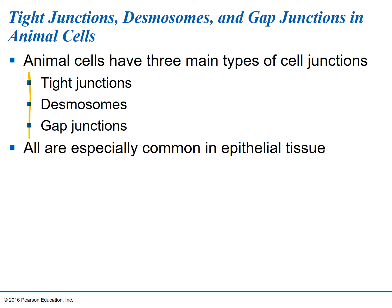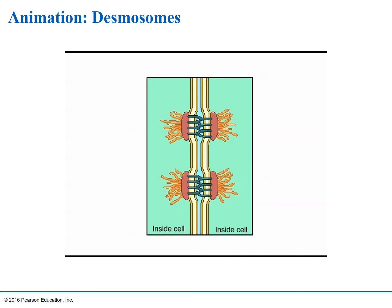These three junction types — tight junctions, desmosomes, and gap junctions — are found in eukaryotic animal cells, specifically in epithelial tissue. Let's look at an animation of what a desmosome does. Notice we're looking at two cell membranes — two cells next to each other — showing their interconnectedness. Desmosomes, or anchoring junctions, appear as thickened patches in the cell membrane region between two cells. They contain specialized proteins such as keratin — the same protein in fingernails and hair — which increase the rigidity of tissues and also function as anchors for fibers in the cytoskeleton.